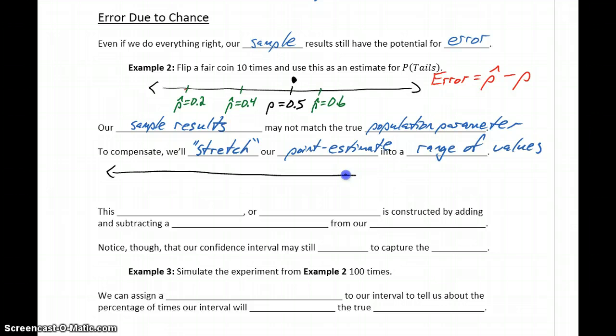So if we look again at this number line, we know 0.5 should be that true population proportion that we're trying to capture. Based off our sample statistic, whatever that ends up being, we're going to stretch it to be a little bit larger and a little bit smaller. So we're going to